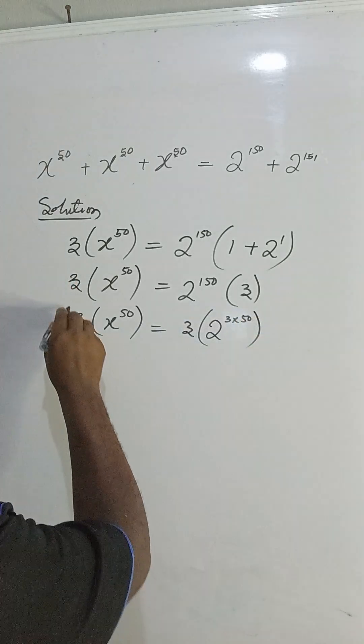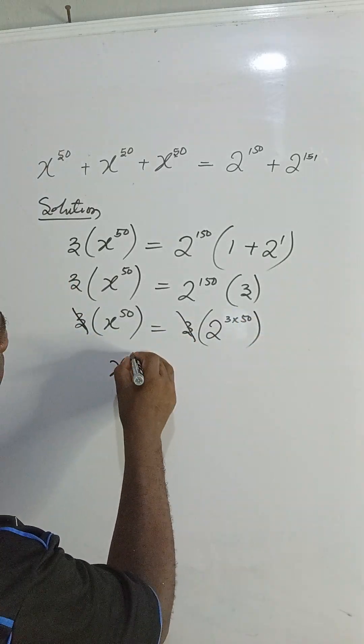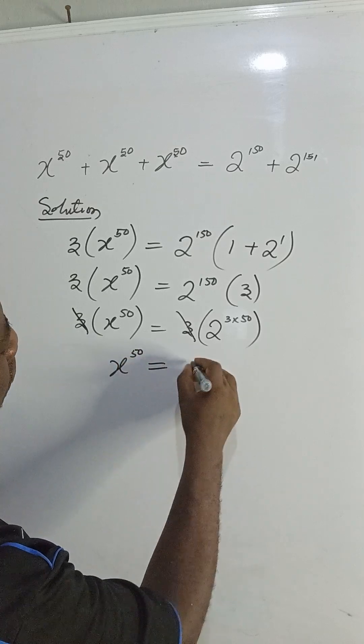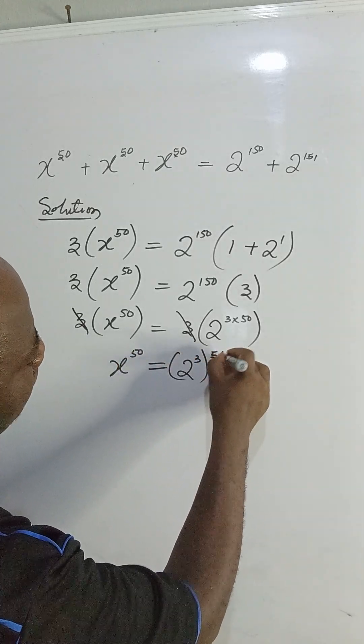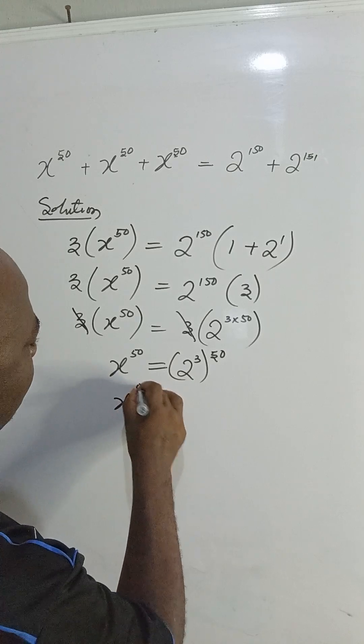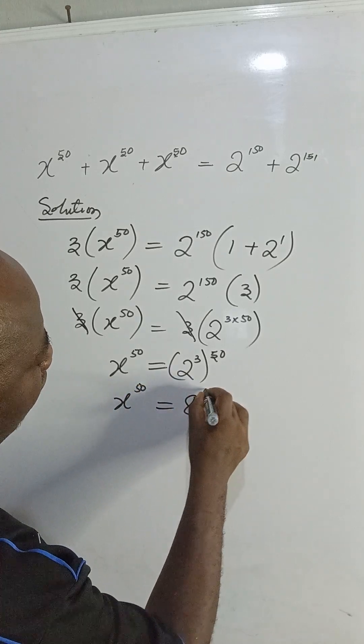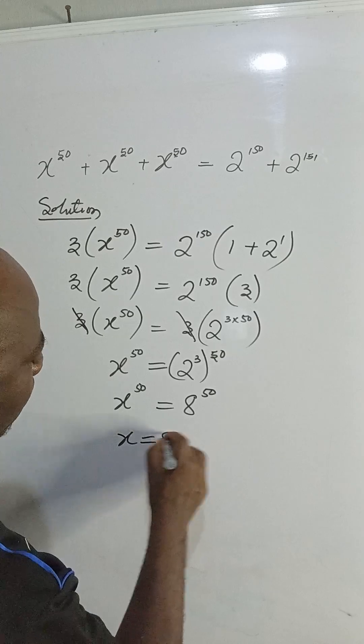So the 3 on both sides cancel out. We have x to the power of 50 equal to 2 to the power of 3 all to the power of 50. And x to the power of 50 will be equal to 8 to the power of 50. So that means x will be equal to 8.